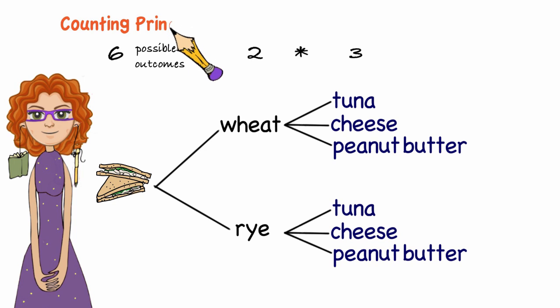I'm using the counting principle. The counting principle tells us that if we have two decisions to make, and there are m ways to make the first decision and n ways to make the second decision, the product of m and n tells us how many different outcomes there are.